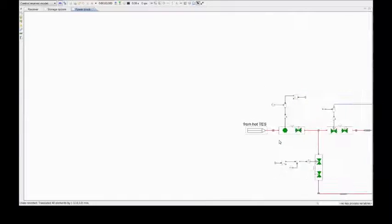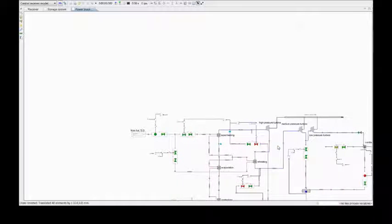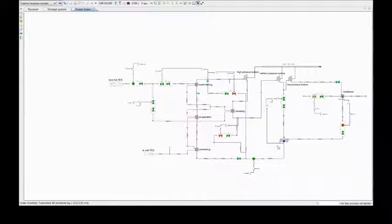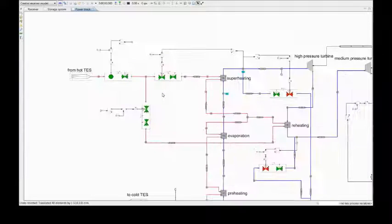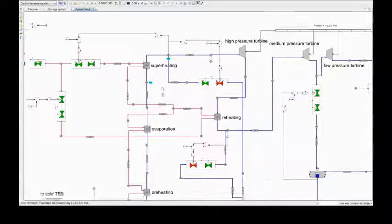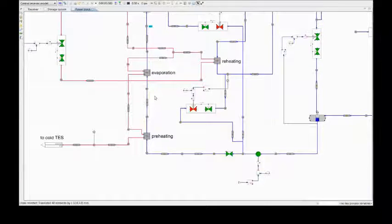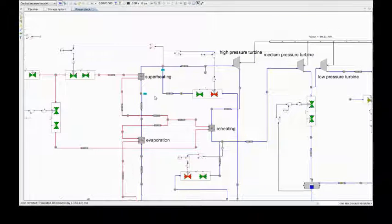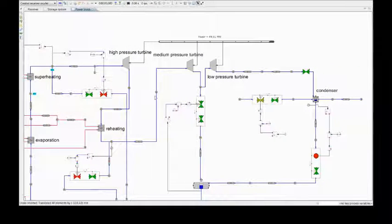A comprehensive model for the heat exchanger train and power block supports the analysis of performance on system level and interactions between different components. The molten salt flow lines are here shown as red and the water and steam as blue.